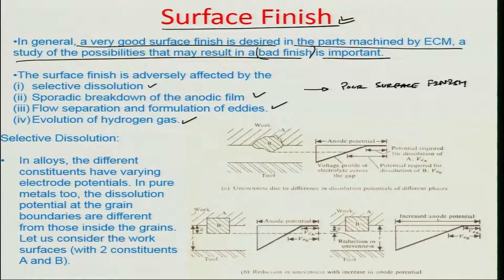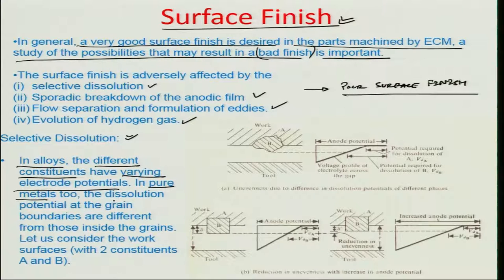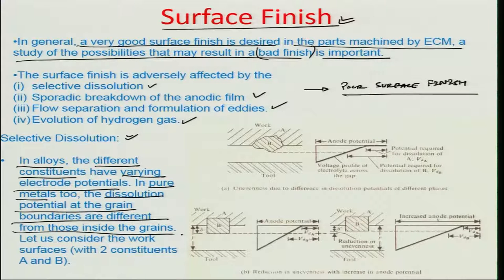One aspect is the overall machining of the work piece surface based on the direction of electrolyte flow, and the other is the surface finish issues arising because of that flow. Let us look at selective dissolution first. When machining alloys, different constituents have varying electrode potentials. Even in pure metals there is still a problem that the dissolution potential at the grain boundaries is quite different from those inside the grain, because the grain boundaries differ in composition and crystal orientation, being a merging between two lattices grown in two different directions.